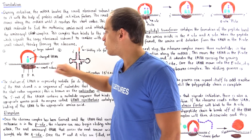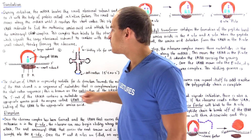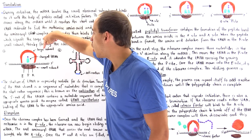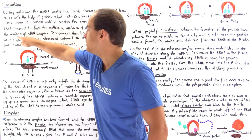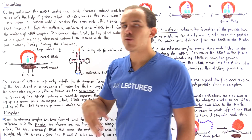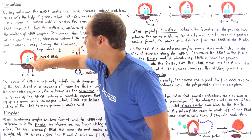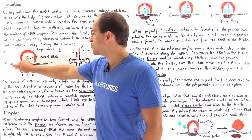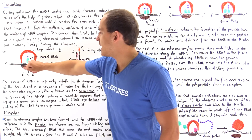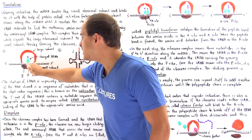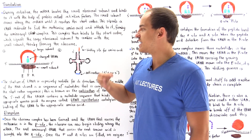We have the mRNA molecule that begins at the 5' end and ends at the 3' end. We have the small subunit and the large subunit. We have the charged tRNA, or the aminoacyl-tRNA, that contains our methionine amino acid. The amino acid is shown in purple as the circle, our tRNA is shown in green, and this red region here is the start codon region — the sequence AUG.